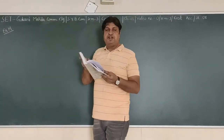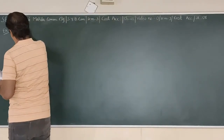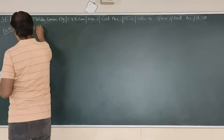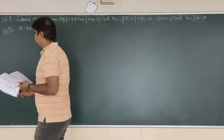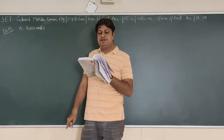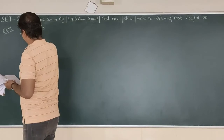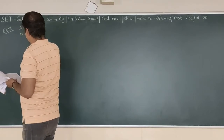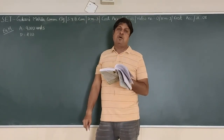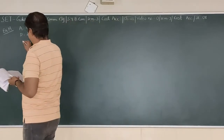Now let's find EOQ. We are given annual consumption of 9,000 units. Cost per unit, meaning price, is given as 20. Ordering cost is given as 100.